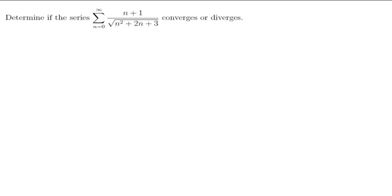Determine if the series summation n going from 0 to infinity of (n+1) over the square root of n² + 2n + 3 converges or diverges.